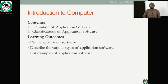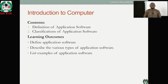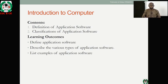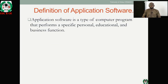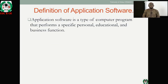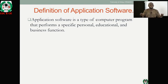Our content for today covers the definition and classification of application software. At the end of class you should be able to define application software, describe its types, and list several examples. Application software is a type of computer program that performs specific personal, educational, and business functions — depending on what you want to do at a particular point in time, there is always a software to help you solve that particular problem.